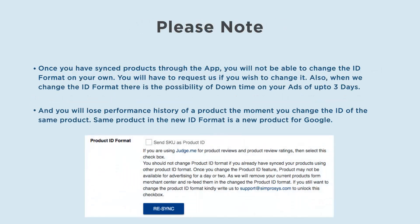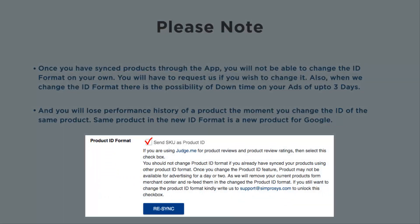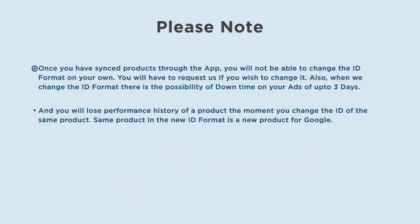Please note: once you have synced products through the app, you will not be able to change the ID format on your own. You will have to request us if you wish to change it. Also, when we change the ID format there is the possibility of downtime on your ads of up to three days, and you will lose the performance history of a product the moment you change the ID of that product.